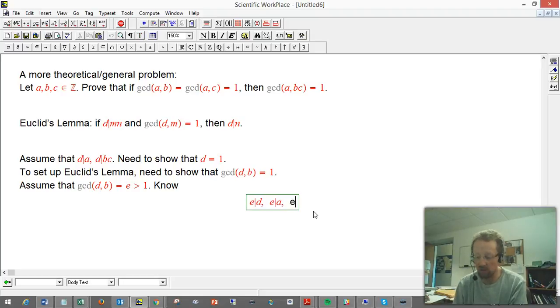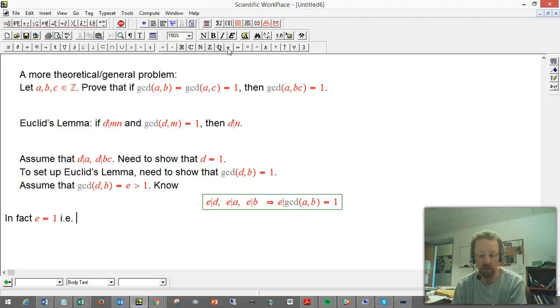But we're also assuming that E divides B. Oh, wait a minute. That all implies that E divides the GCD of AB. But wait a minute. The GCD of AB is supposed to be one. So, in fact, that E has to be one. In other words, D and B really have to be relatively prime.